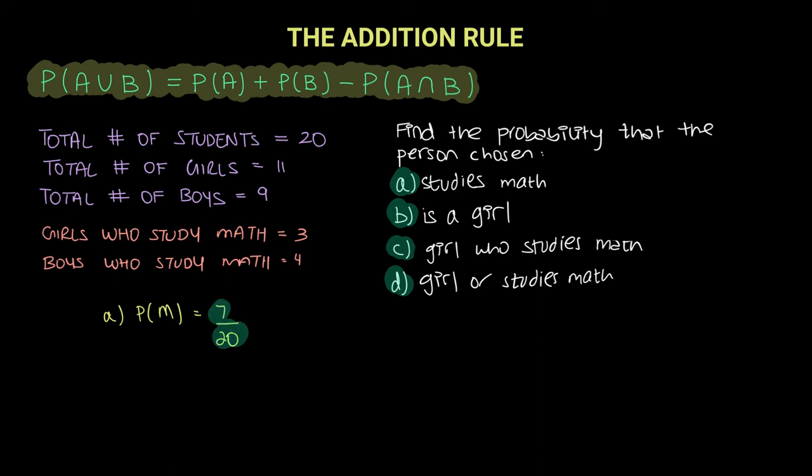Now let's look at part B. Part B is asking us the probability that the person chosen is a girl. Well we can clearly see that there are 11 girls out of 20, so our probability becomes 11 over 20.